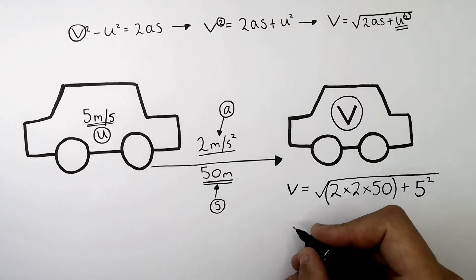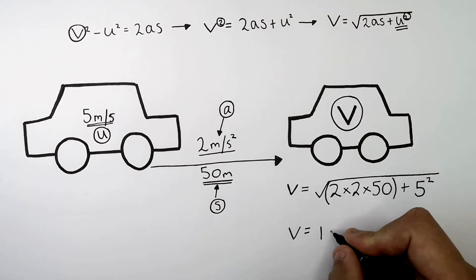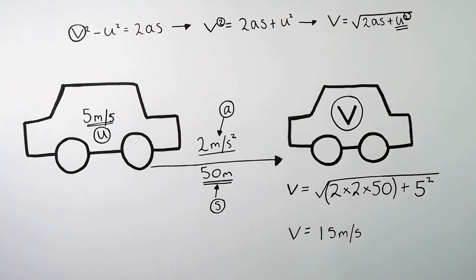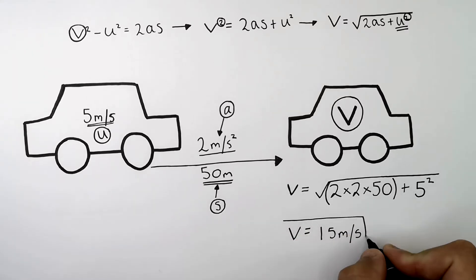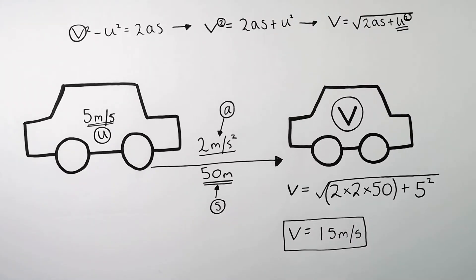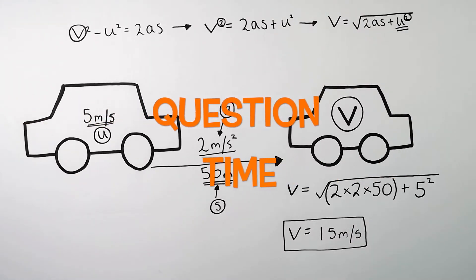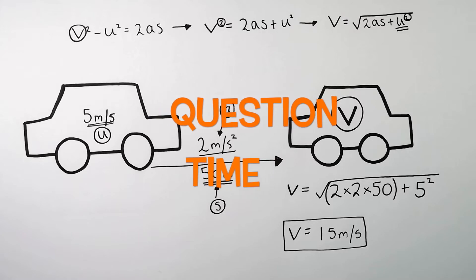That gives you a final velocity v of 15 metres per second — accelerating at 2 metres per second squared over a displacement of 50 metres to a final velocity of 15 metres per second. It's question time. Attempt these questions to check your understanding.